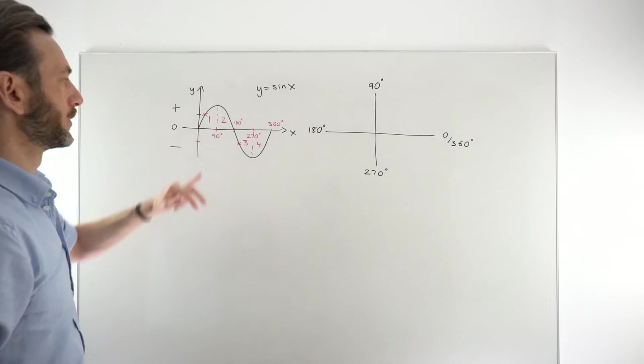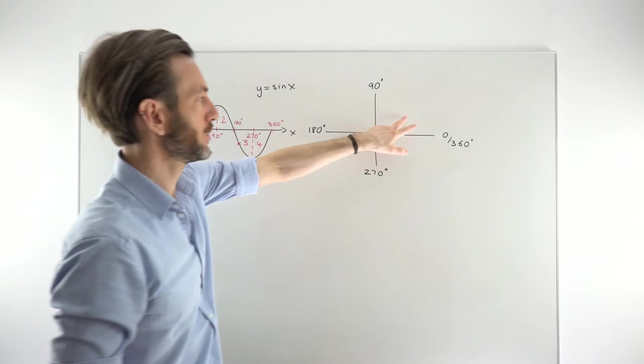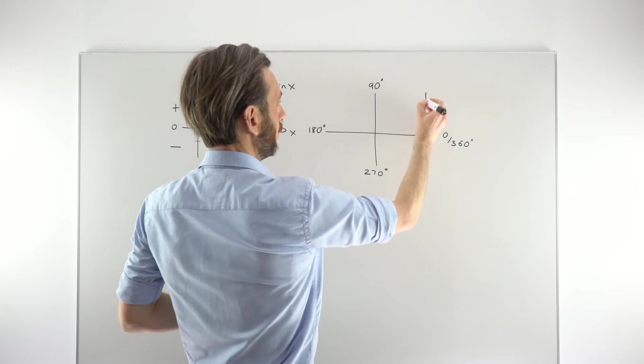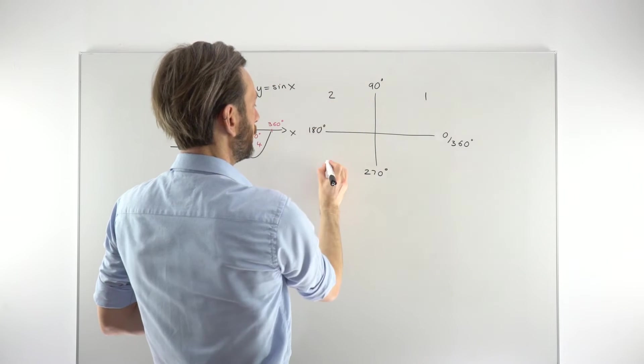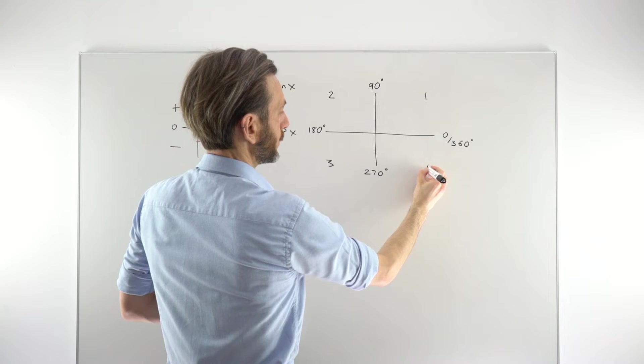And basically, we're assigning the quadrants 1, 2, 3, and 4 to each of these parts here. So this would be quadrant 1. This is quadrant 2. This is quadrant 3. And this is quadrant 4.